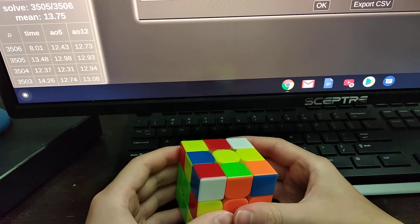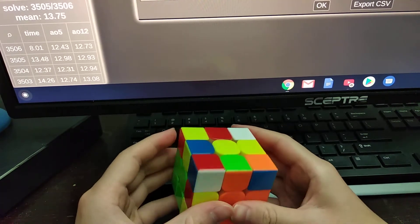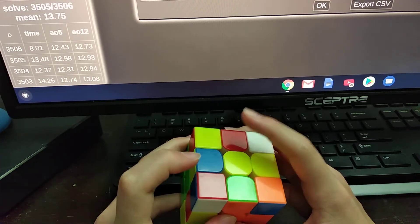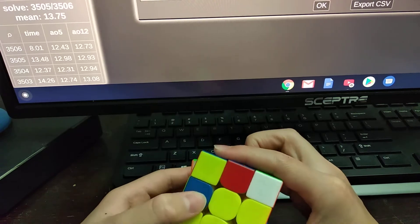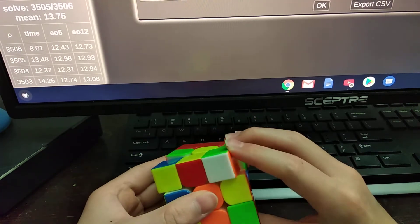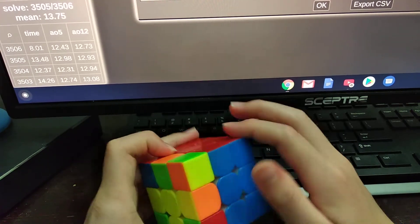So I basically planned out the first two pairs of F2L, which is pretty cool. And then I have this pair, the blue and red pair, which I paired up like this and then inserted to the back, right?